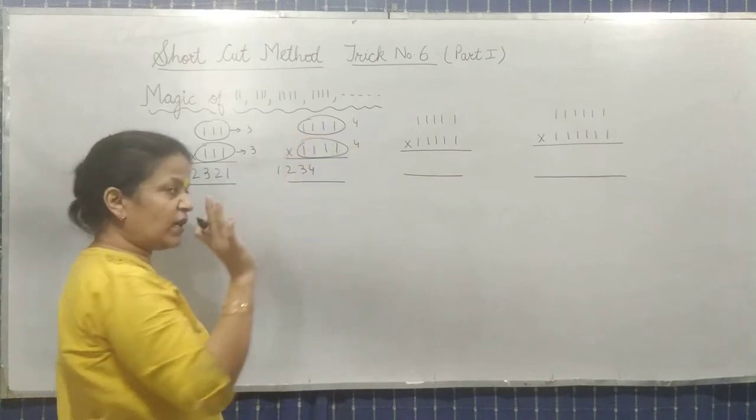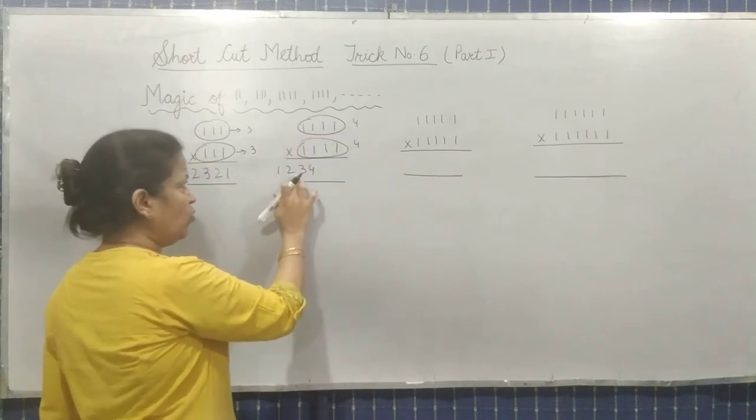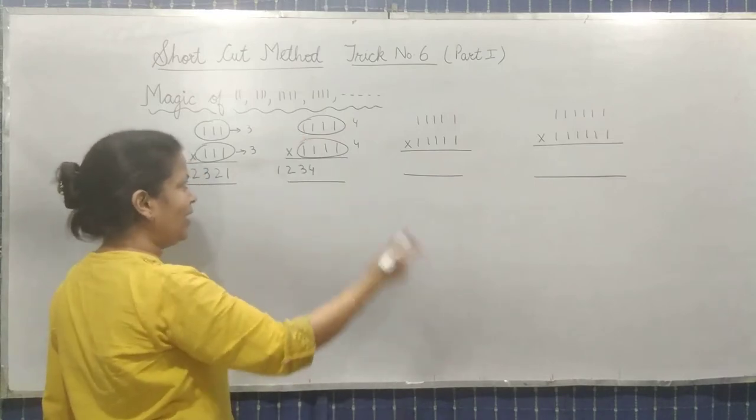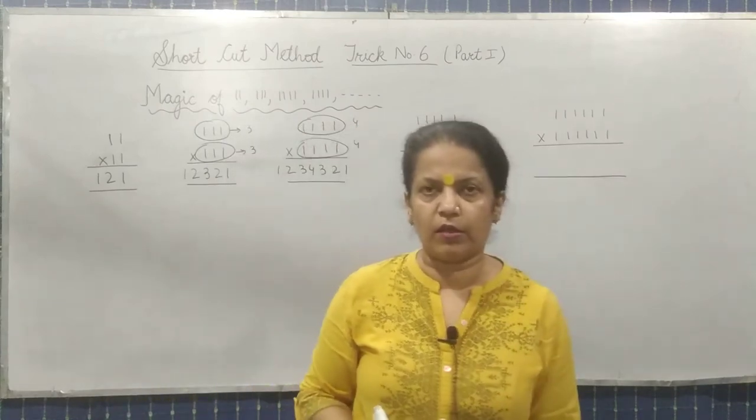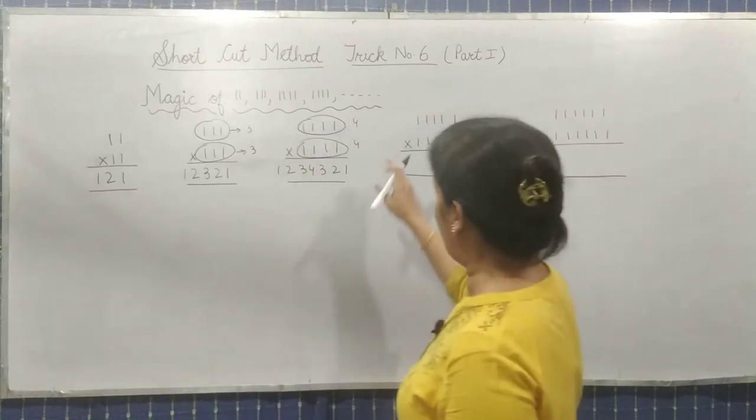4 1's are there. So 1, 2, 3, 4. Then decreasing order: 3, 2, 1. So this is the answer. Clear? Next one.